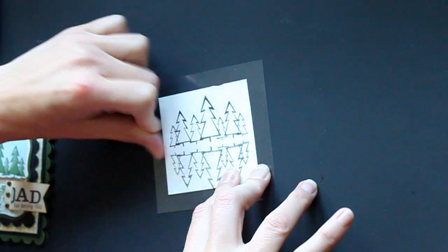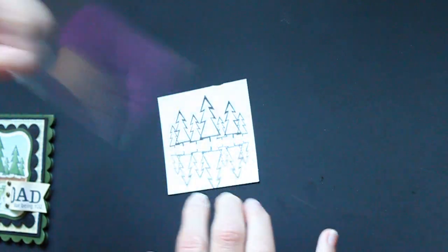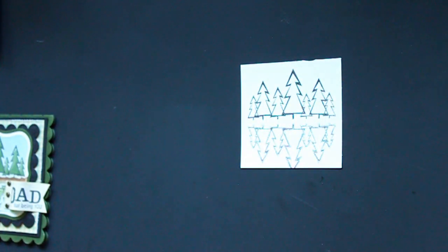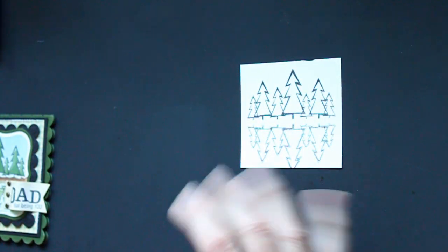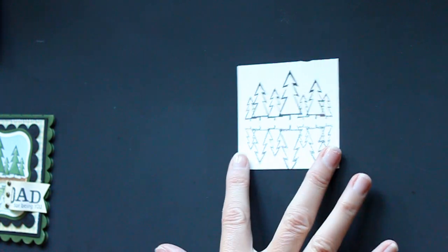Now your second image will always look a little bit lighter, but this is okay because you want it to look like it's reflected in a water or ice area.